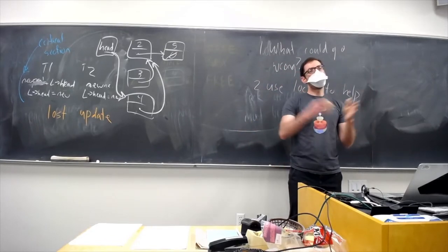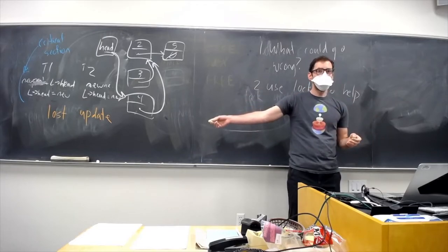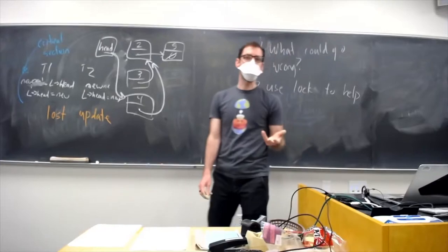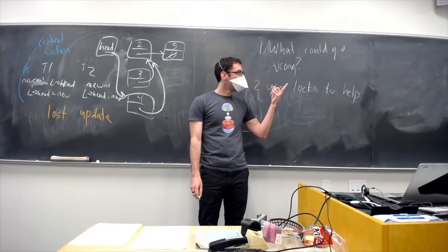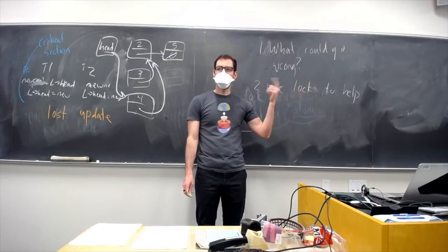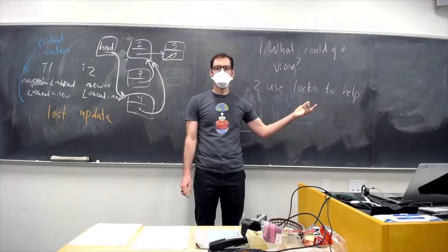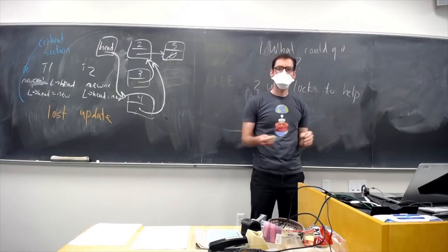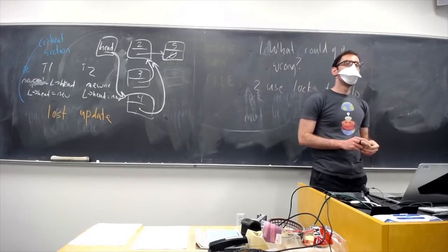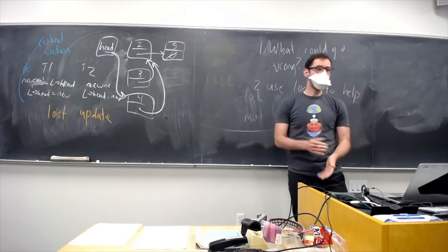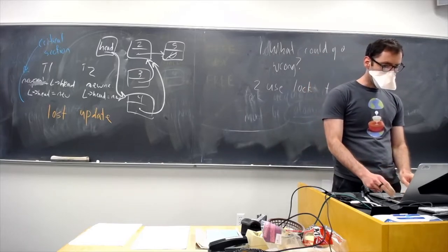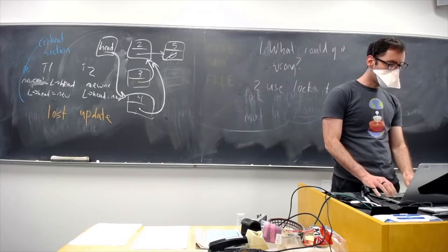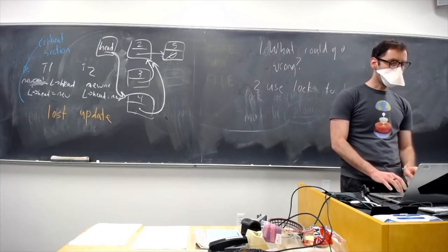This is a tradeoff: if we use the same lock in list_lookup as in insert, and hold the lock during our whole search through the list, we could be sure at the time list_lookup returns that nothing was inserted in the meantime that we missed. But if the list is really long — say a billion nodes — that whole time no one else is allowed to insert anything, which could be a big performance problem.